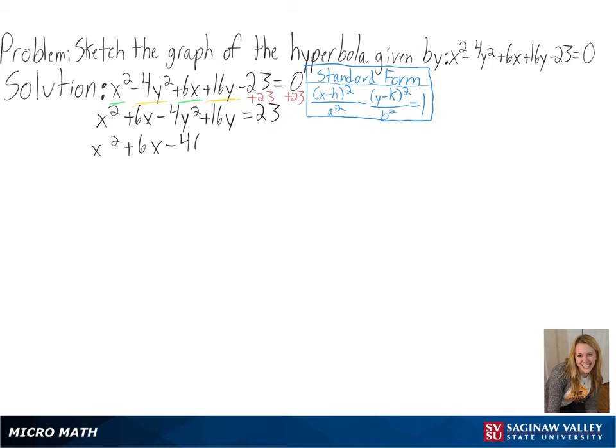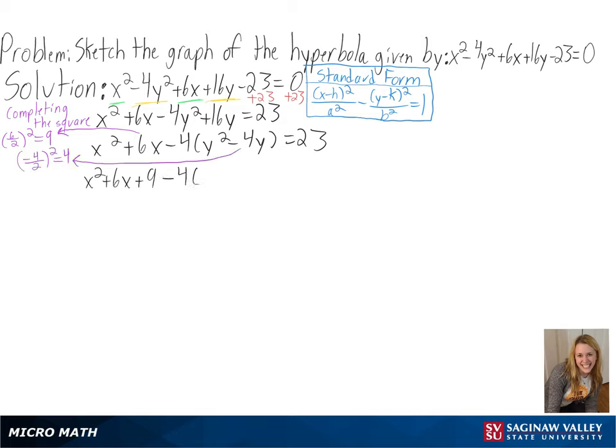To put our equation in standard form, our expressions need to be squared, so we will need to complete the square. We can do this by taking our 6, dividing it by 2, and squaring it to get 9, and then by taking our -4, dividing it by 2, and squaring it to get 4.